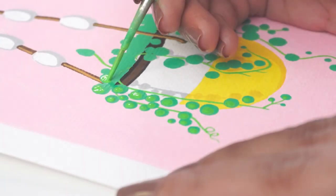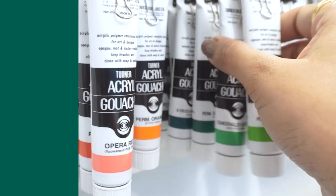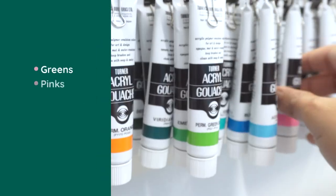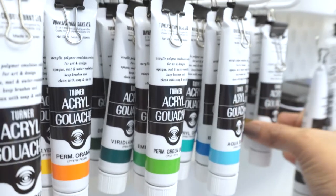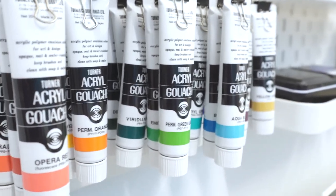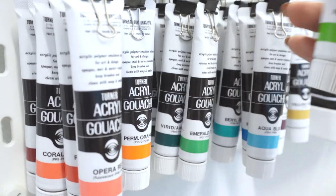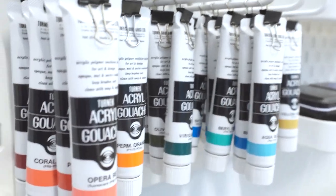We'll start by picking out our colors. I'm picking a bunch of different greens, some pinks, some browns and then black and white to adjust the values. Depending on what paints you have at hand, your colors are likely to be different from mine. But you're welcome to try and recreate the colors I'm using or go for a completely different color palette.